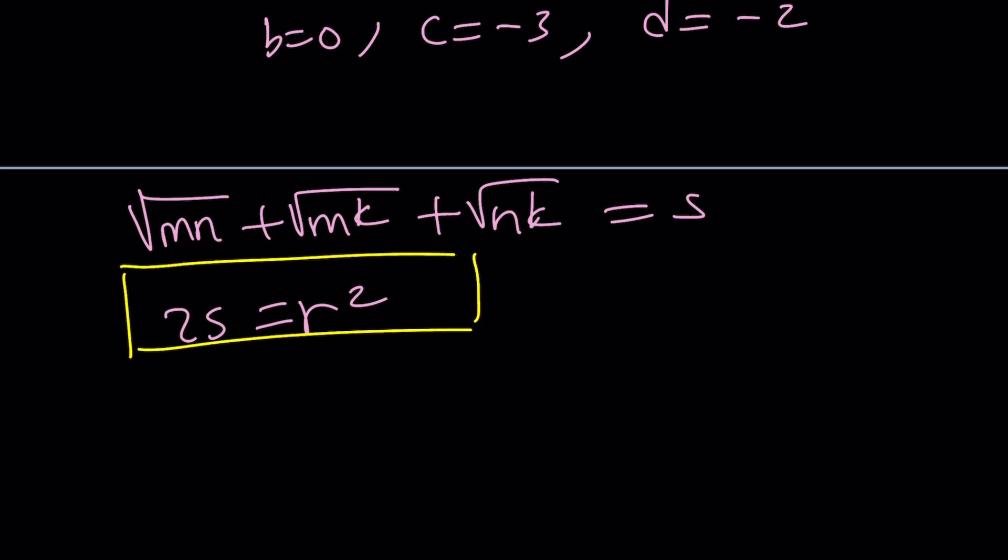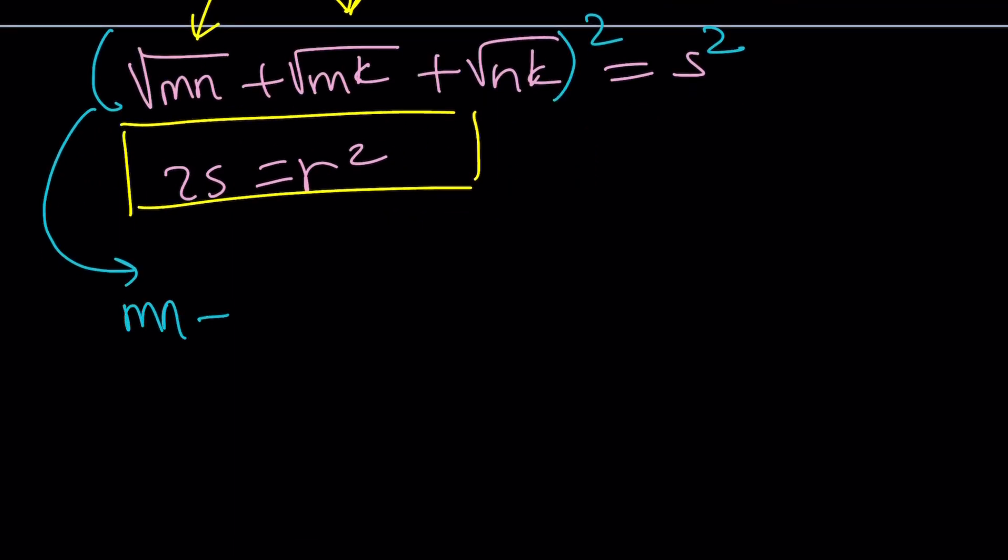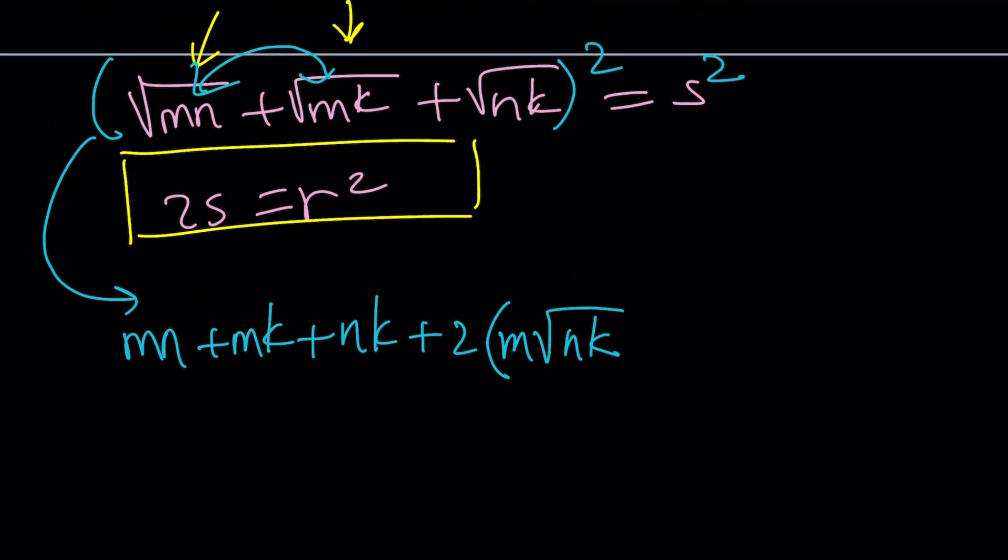From here we get something super duper nice, and that is 2 times this equals r². But let's go ahead and call this something, how about s for sum. So we get, first of all, let's write down what s is because later on we're going to have to refer to it. So this is called s, and we now know that 2s = r². Nice. That's going to be our first relationship. Remember, we're trying to solve for r. The next thing we're going to do is we'll take s and square both sides. Why? Because we don't have an expression for this. We need to find one.